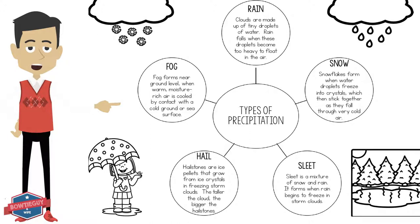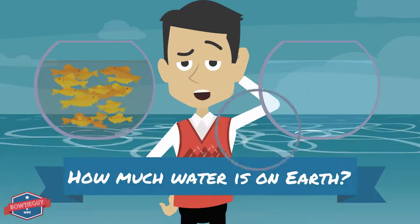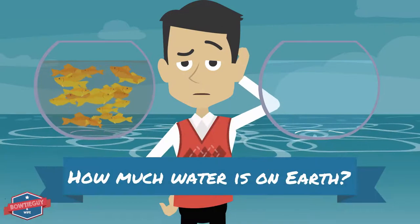Hailstones are ice pellets that grow from ice crystals in freezing storm clouds. The taller the cloud, the bigger the hailstones. Sleet is a mixture of snow and rain. It forms when rain begins to freeze in storm clouds.